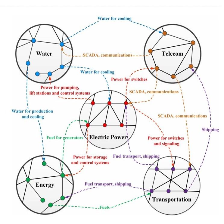This failure process cascades through the elements of the system like a ripple on a pond and continues until substantially all of the elements in the system are compromised and/or the system becomes functionally disconnected from the source of its load. For example, under certain conditions a large power grid can collapse after the failure of a single transformer.